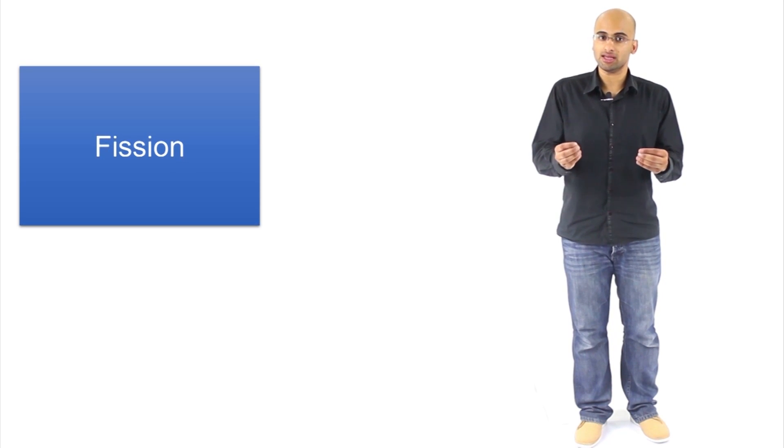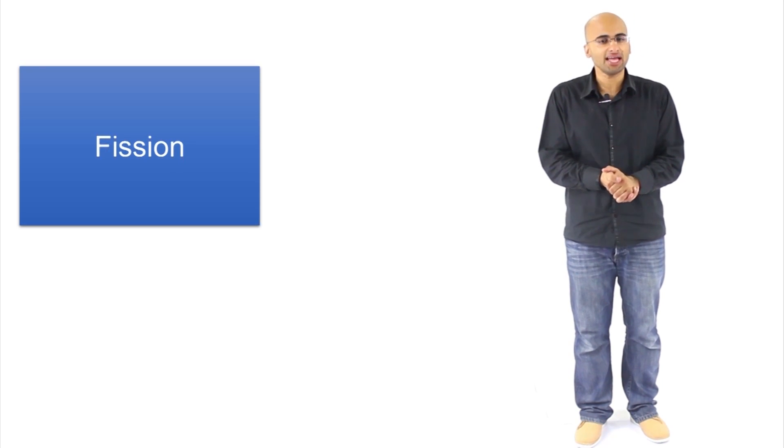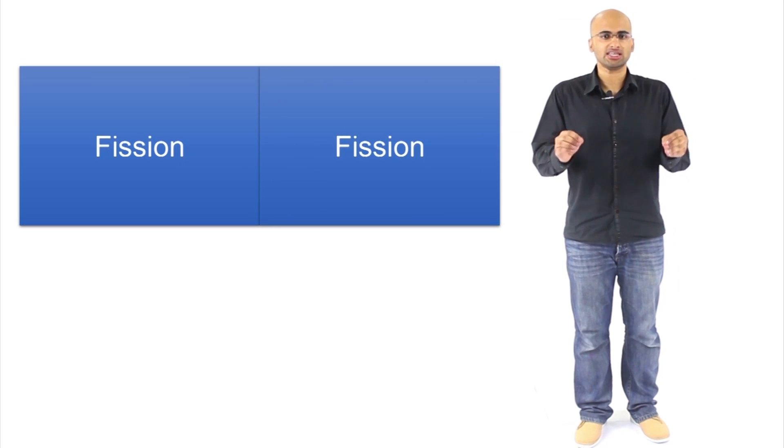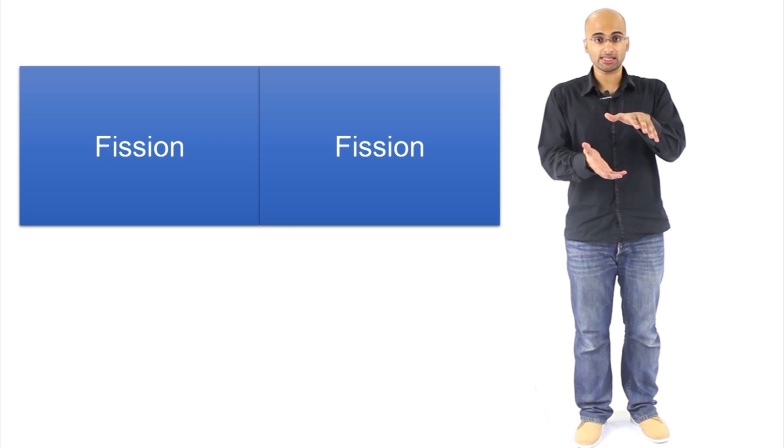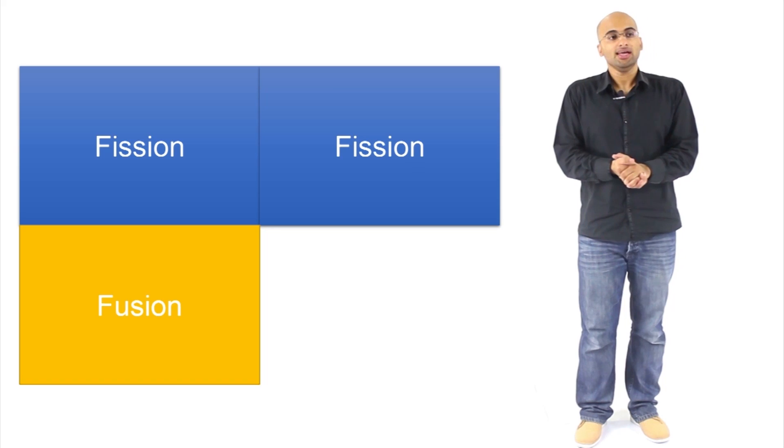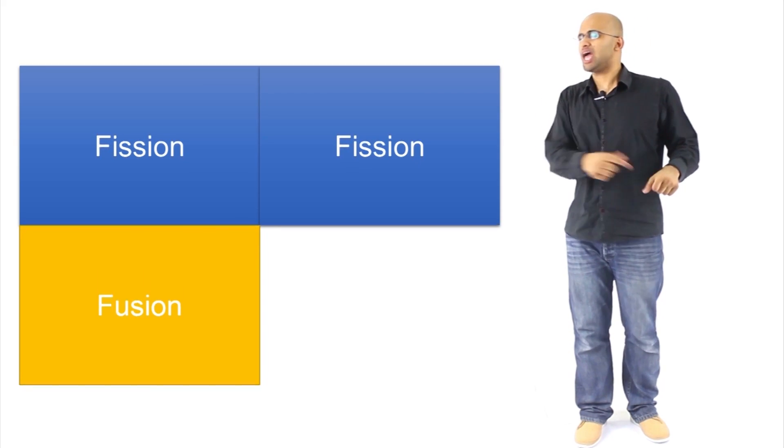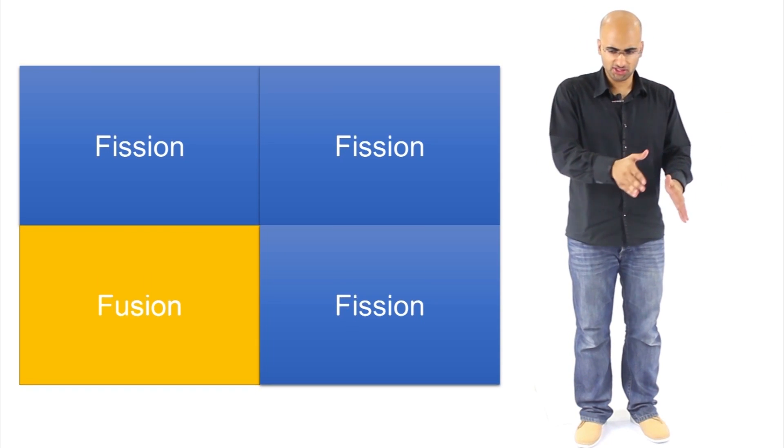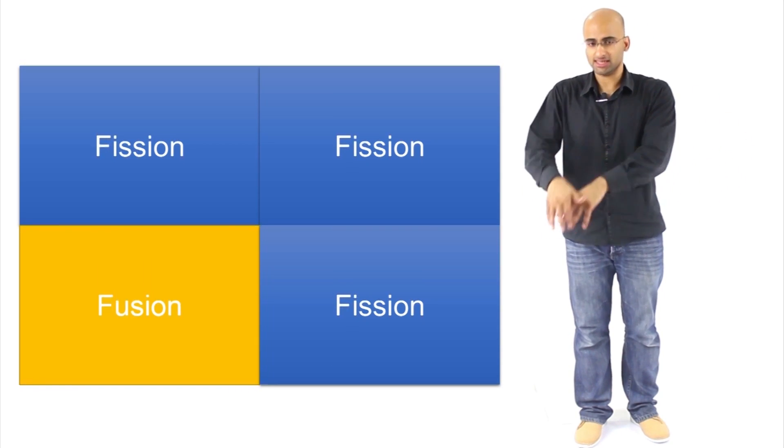And then that induces another fission reaction. And then that fission reaction creates enough pressure and heat to make hydrogen atoms fuse. That's why it's called the hydrogen bomb. And then that fusion process induces another fission process. So you end up with something like fission, fission, fusion, fission. And at the end of it, you get a monumental explosion of epic proportions. That's basically how a hydrogen bomb, a fusion bomb, works.